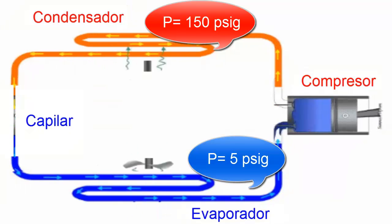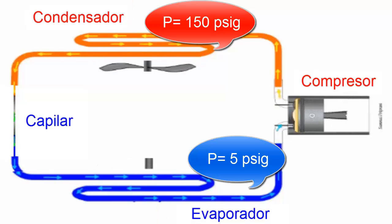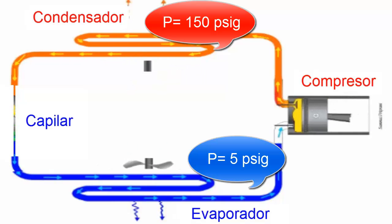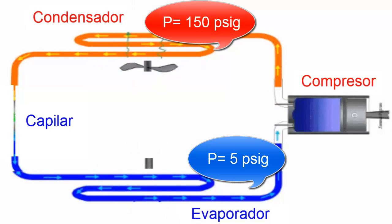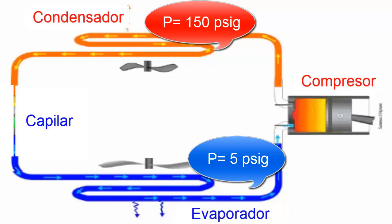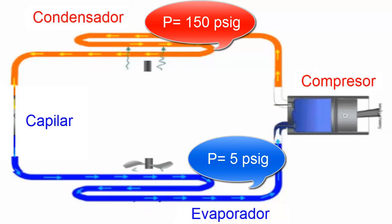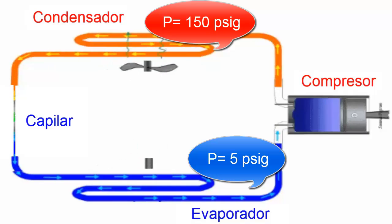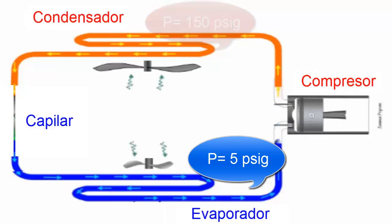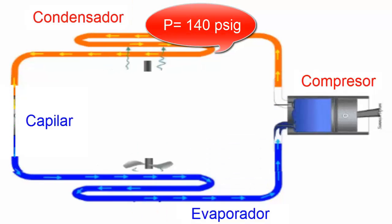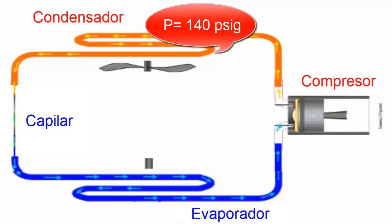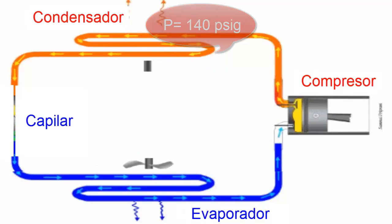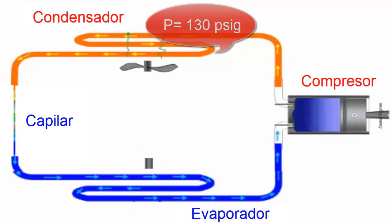6. As the system operates, the pressure at the low pressure point may decrease significantly, possibly reaching 5 pounds per square inch, while the high pressure starts to resemble the initial value. 7. After a few minutes, the high pressure could start decreasing as less refrigerant reaches this point. The system may stabilize with lower pressures.